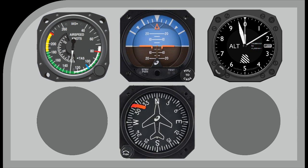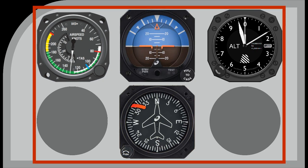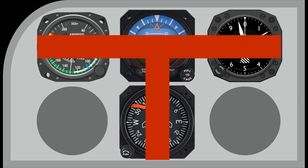We have the direction indicator, which is positioned below the artificial horizon. These four instruments are the main instruments for flying in poor weather, or commonly known as instrument meteorological conditions — IMC for short. They are set in a T-shape, the significance of which will be discussed shortly.